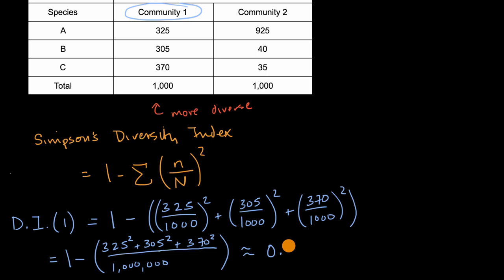Now let's do the same thing for community 2. So if I write it over here, the diversity index for community 2 is going to be equal to 1 minus, I'll put a big parentheses here, and we're going to have 925 over 1,000, squared,